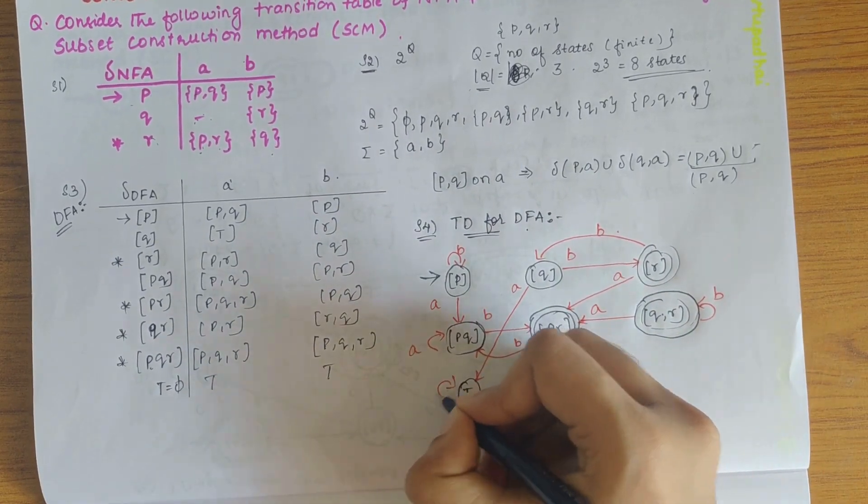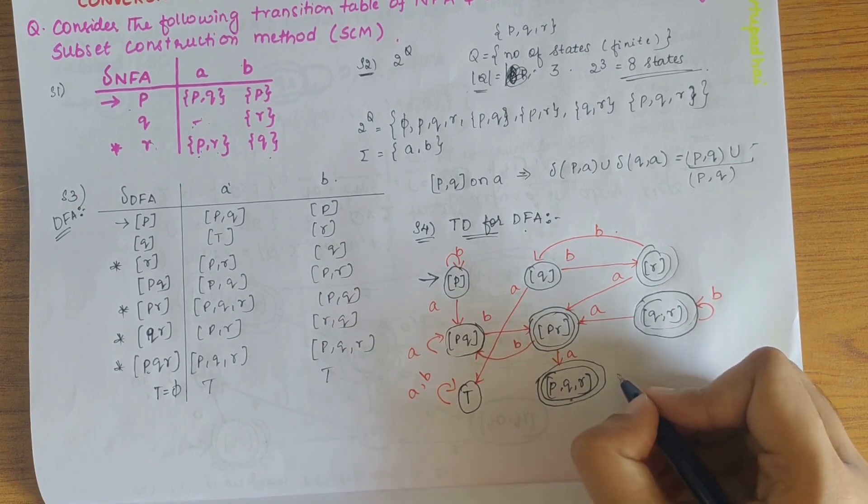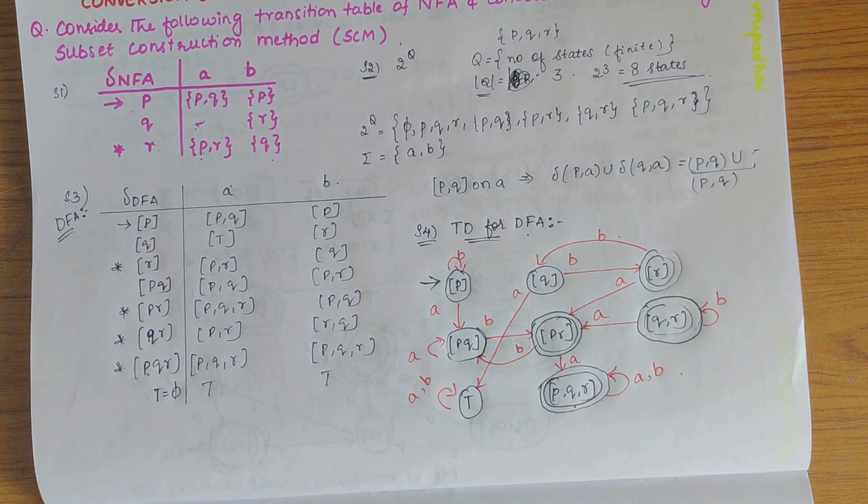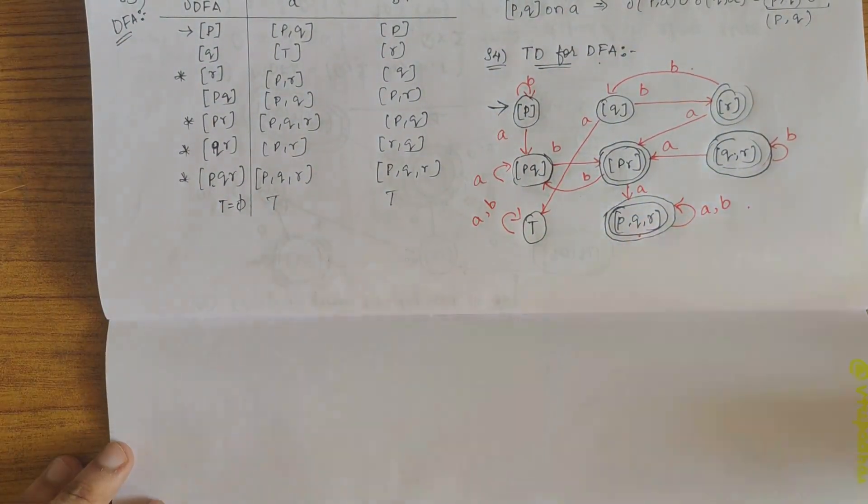Then we have trap state, for trap state it's always the self loop. And for pqr, pqr on a gives pqr itself, pqr on b also gives pqr itself. So here we have done drawing the transition diagram.